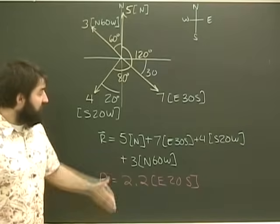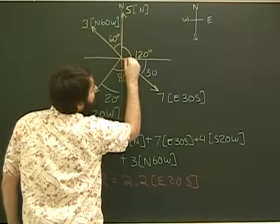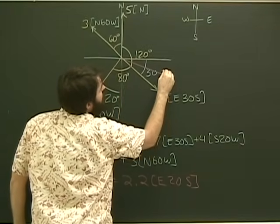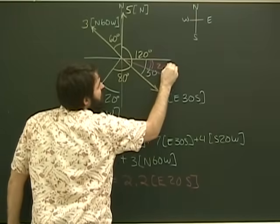So, 2.2 east 20 south, if I put that on my bearing diagram here, it's going to be around here, where this angle is 20 degrees.